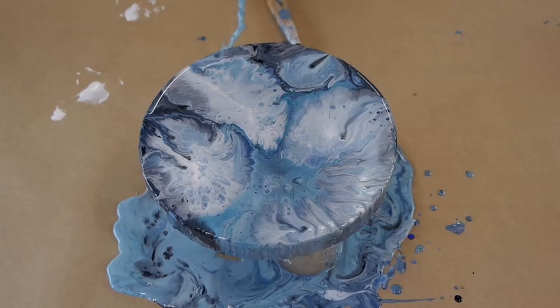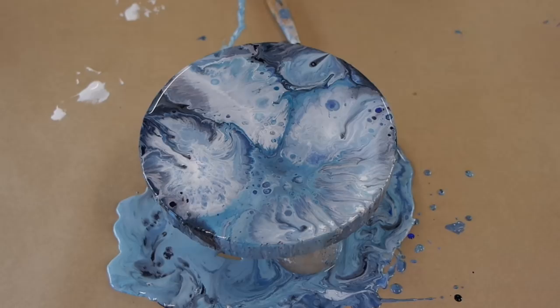If you choose to, you can just get a blow torch and lightly go over the surface to pop any bubbles. As you can see, it will also bring up colors from underneath and create another cool effect.